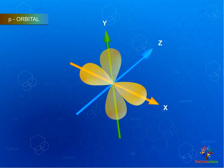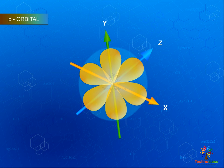Px, Py, Pz along x, y and z axis. Two lobes of each orbital are separated by a nodal plane where electron density is zero.